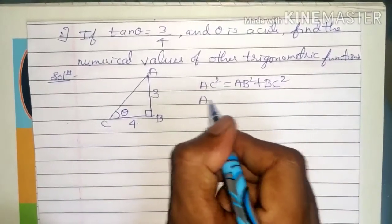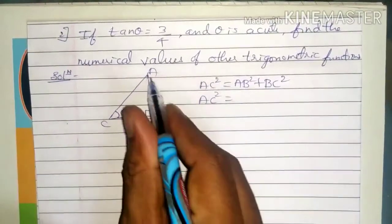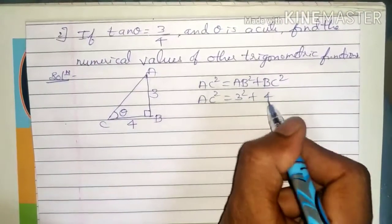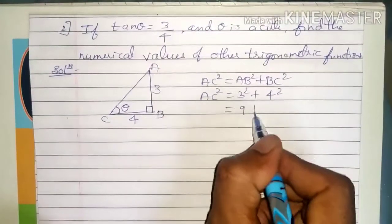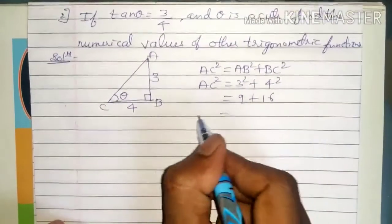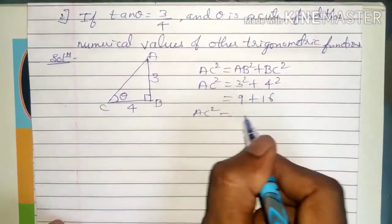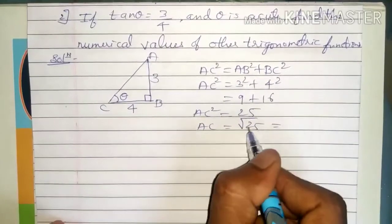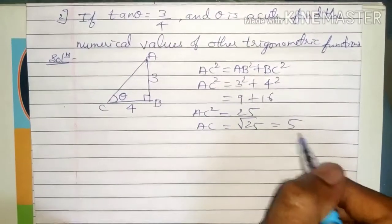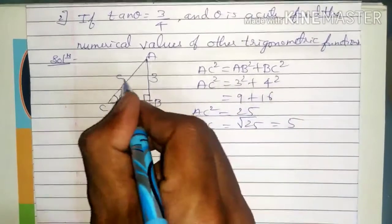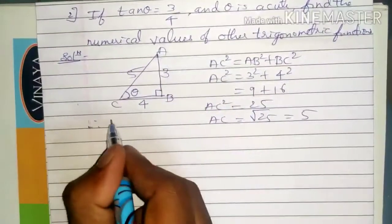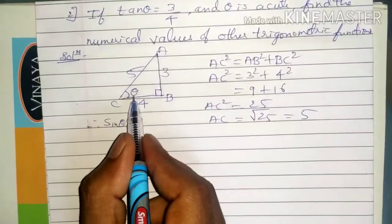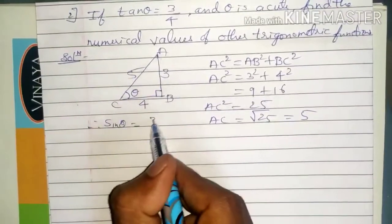Using Pythagoras theorem: AC squared equals AB squared plus BC squared. AB is 3 and BC is 4, so AC squared equals 3 squared plus 4 squared, which is 9 plus 16, equal to 25. Therefore AC equals root 25, and root 25 equals 5, since 5 times 5 is 25. So the hypotenuse is 5.